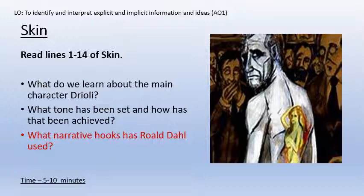Now we're going to start reading Skin by Roald Dahl and we're going to be looking particularly at the main character, who is called Drioli - what did we learn about him, what tone has been set and how has that been achieved. You can answer the second one by saying what type of narrative hook you think it is. I'll read it for you. Hopefully you've got a printout of it and you're sitting there with it in your hand. If not, you're looking at it on the screen.